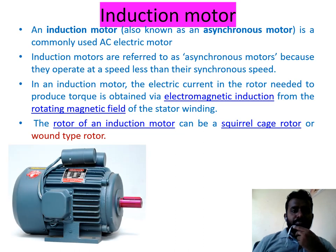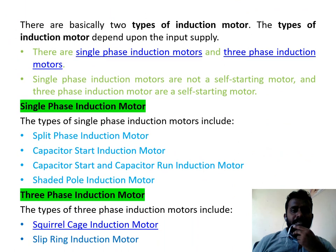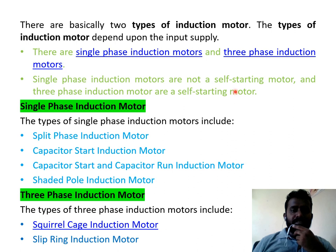This is a basic practical induction motor. There are basically two types of induction motors depending on the input supply: single phase and three phase induction motors. Single phase induction motors are not self-starting motors, and three phase induction motors are self-starting. We have also discussed the reason for this in the previous lecture.